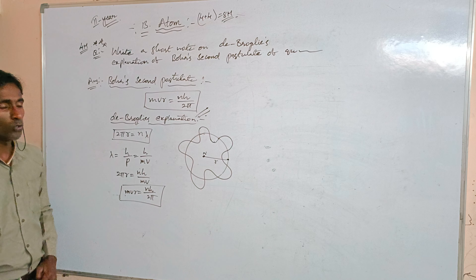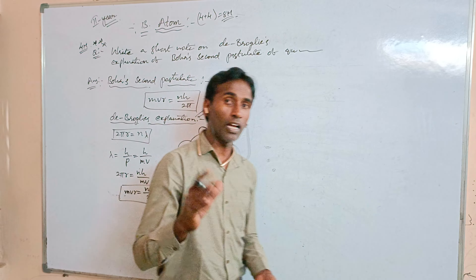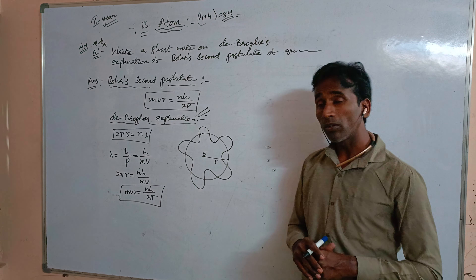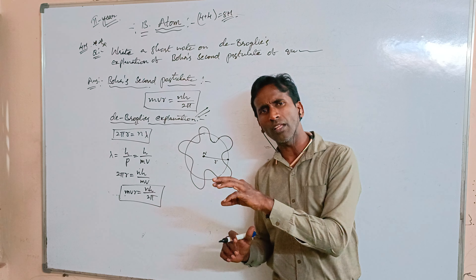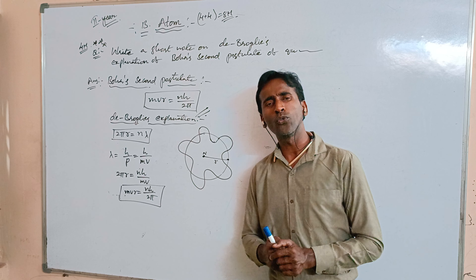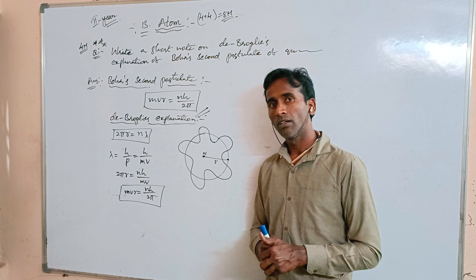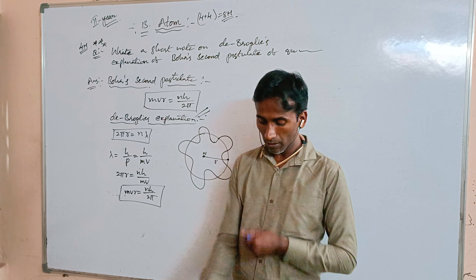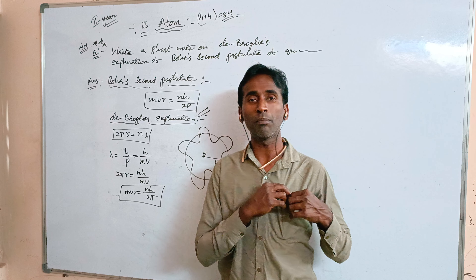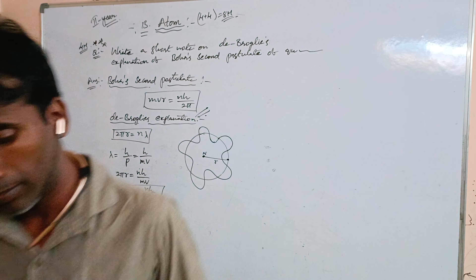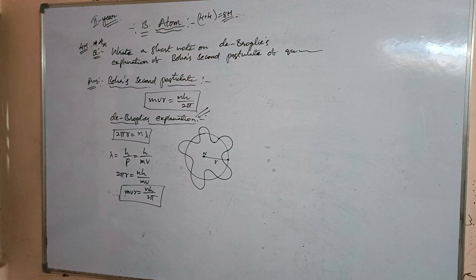So the required formula is mvr equals nh/2π. This is the de Broglie explanation of Bohr's second postulate. The circumference of the circular orbit equals an integral multiple of the wavelength; substituting λ equals h/mv gives the quantization condition mvr equals nh/2π. I hope everyone has understood this derivation.